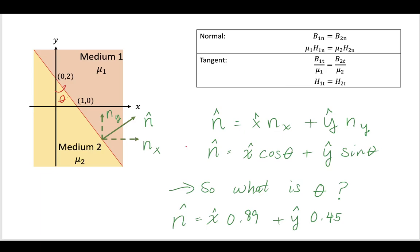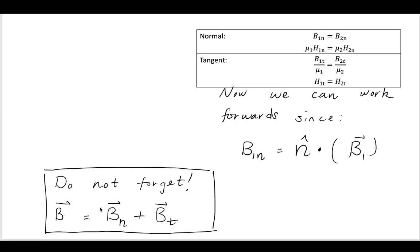So now that we know what normal is, we should be able to move towards using these expressions, where we have normal and tangent relationships for the boundary conditions. So as we continue to go forward, we can't forget that any vector could be decomposed as the normal part plus the tangent part. So we're going to work forwards by seeing that the magnitude of the flux density in the normal direction would be equal to n-hat, that normal unit vector, and this is what we just found, dotted with our flux B1, which was given.